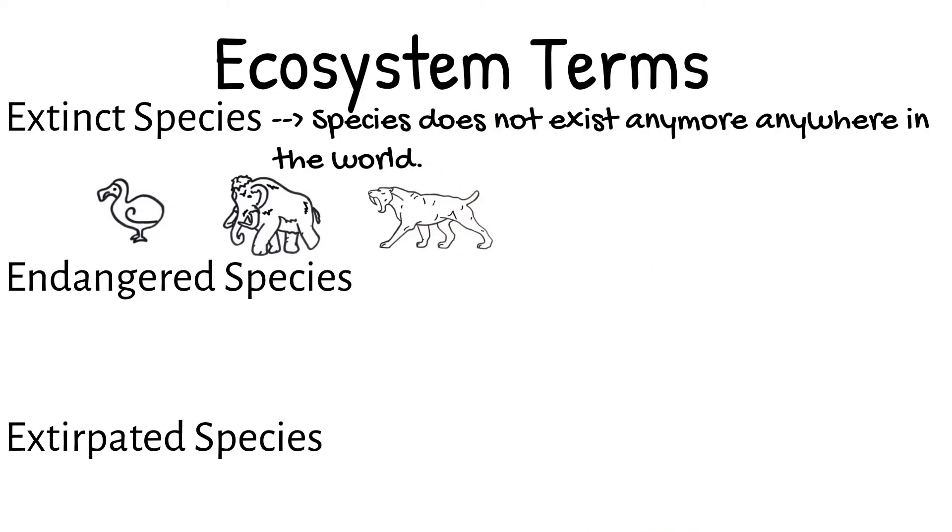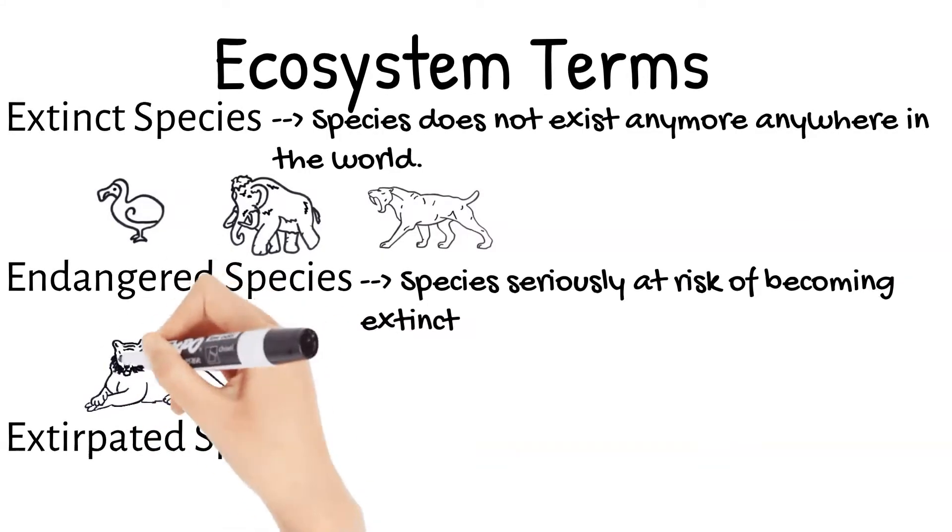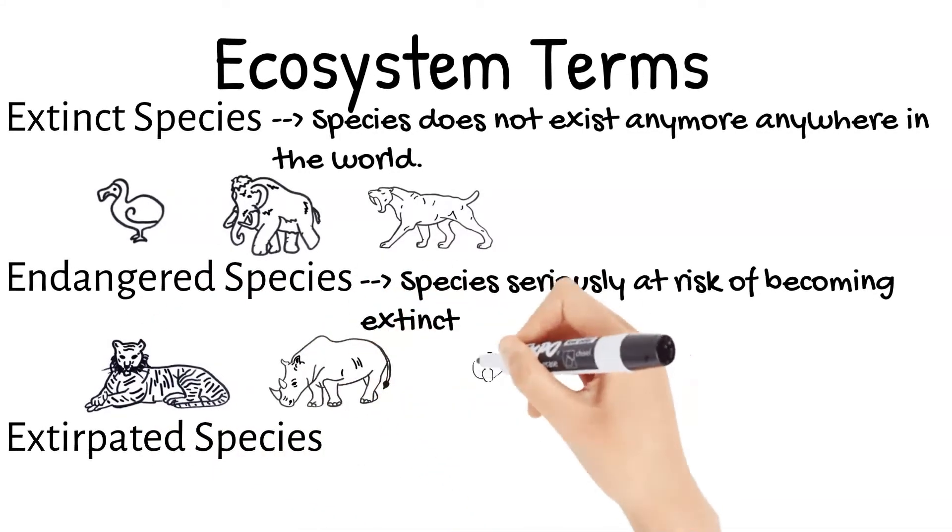Endangered species are those seriously at risk of becoming extinct but aren't extinct yet. Those currently include the Bengal tiger, black rhinos, and giant pandas.